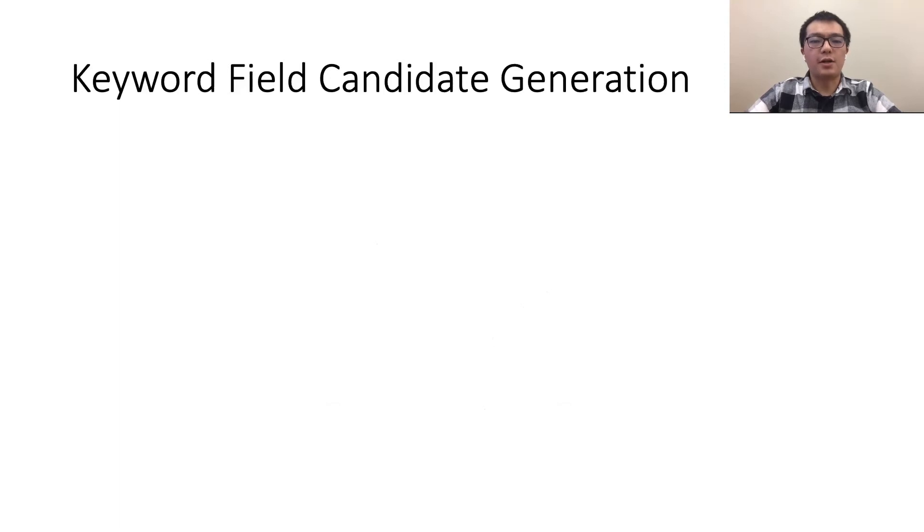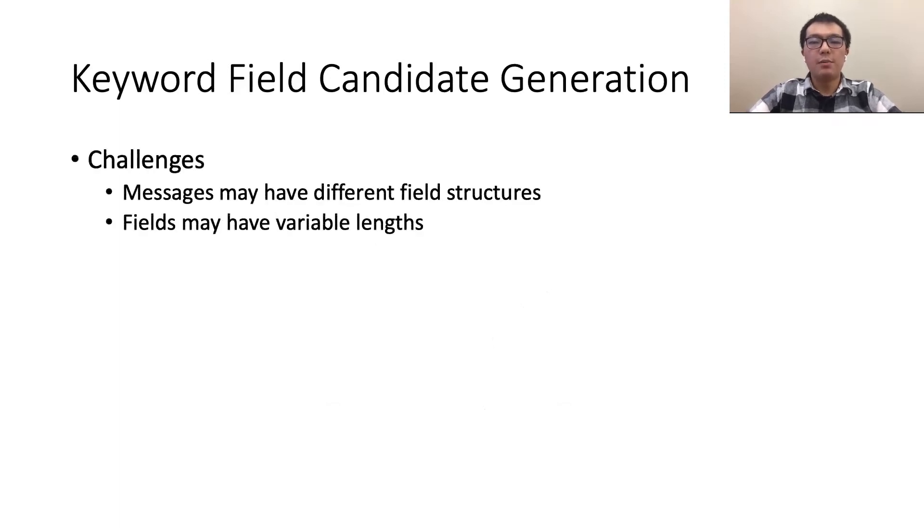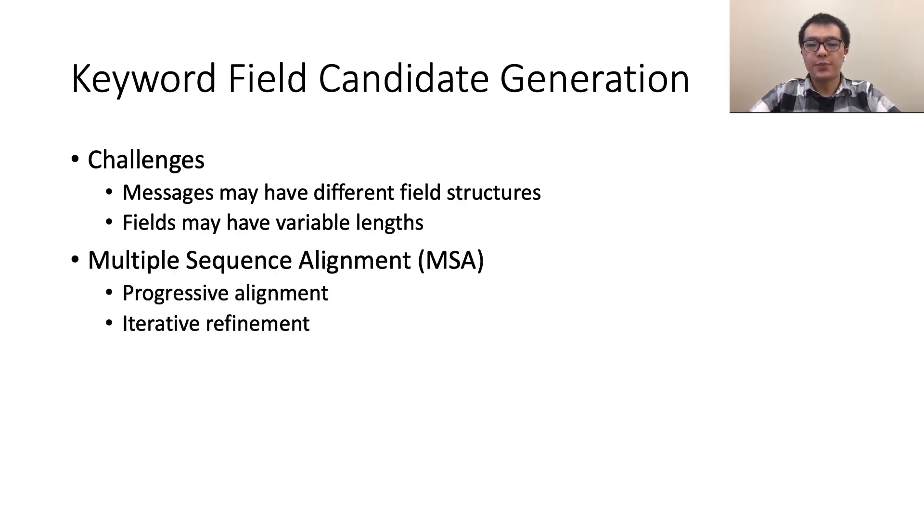The keyword field candidate generation and the probabilistic keyword identification. The first step is to identify a set of candidates for keywords. Message data is composed of multiple fields. For complex protocols, messages may have different structures and some fields may have variable lengths which makes a field appear at different positions in different messages. Intuitively, the idea is to use alignment algorithms. We leverage multiple sequence alignment or MSA which is an extension of pairwise alignment in bioinformatics and could align all sequences at a time. Progressive methods and iterative refinement could be used to reduce computational complexity and improve accuracy.